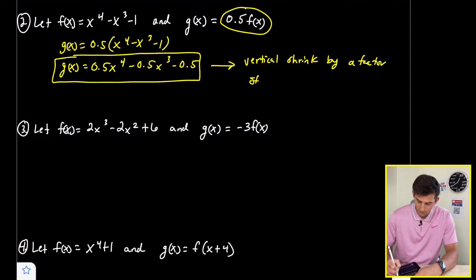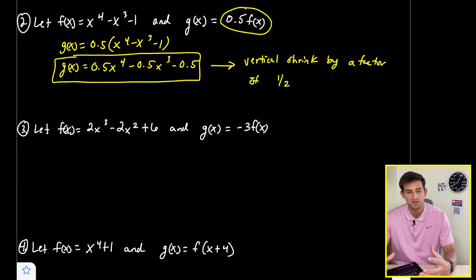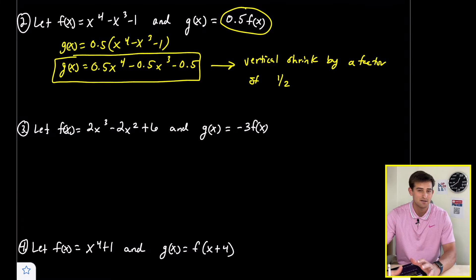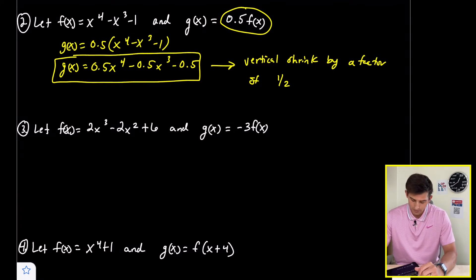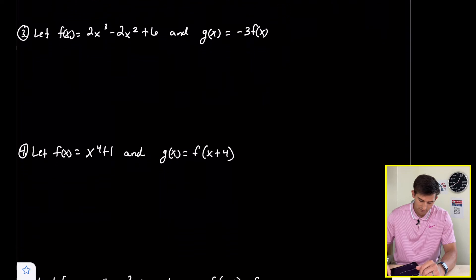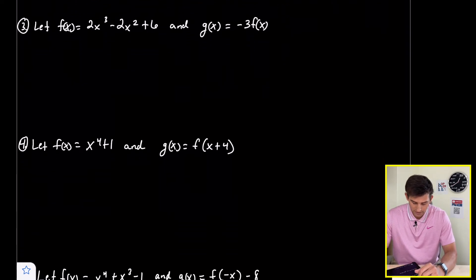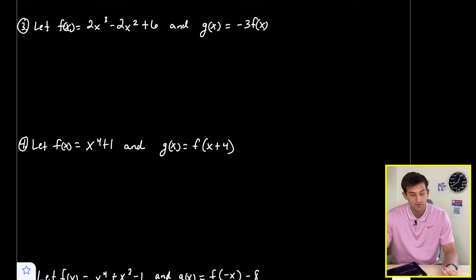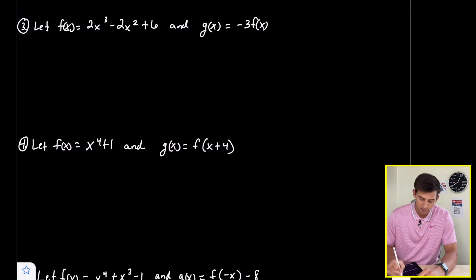It's a vertical transformation because the multiplication is happening to f of x and not directly to x. If it were happening to x, that would be horizontal. Number three: let f of x equal 2x cubed minus 2x squared plus 6, and g of x equals negative 3 times f of x. Now we have two transformations going on — the negative and the multiplying by 3.